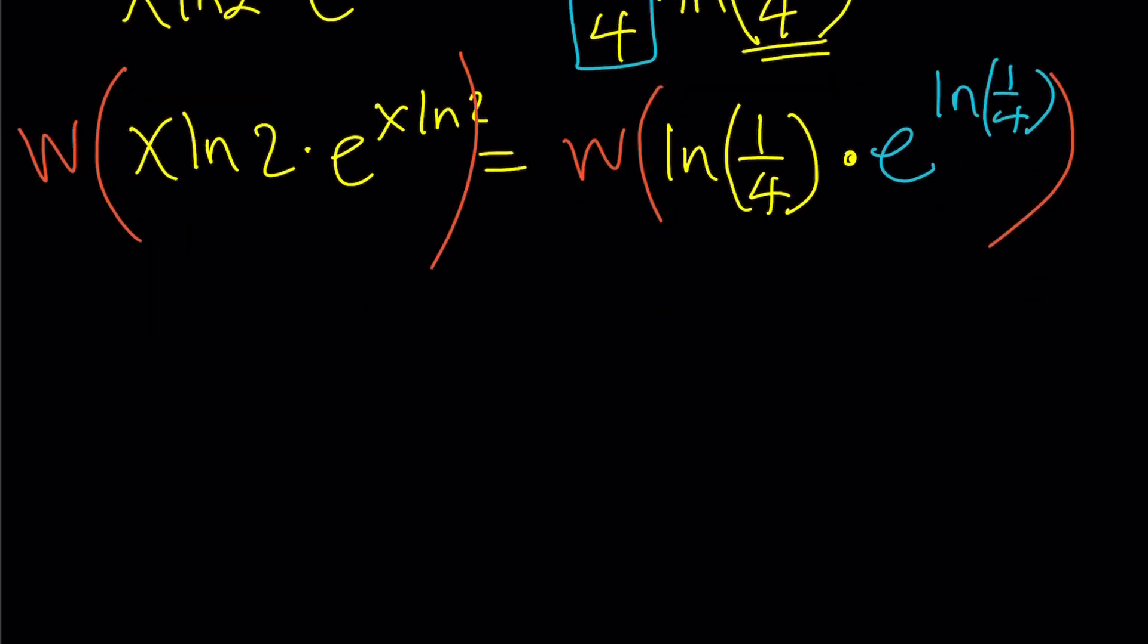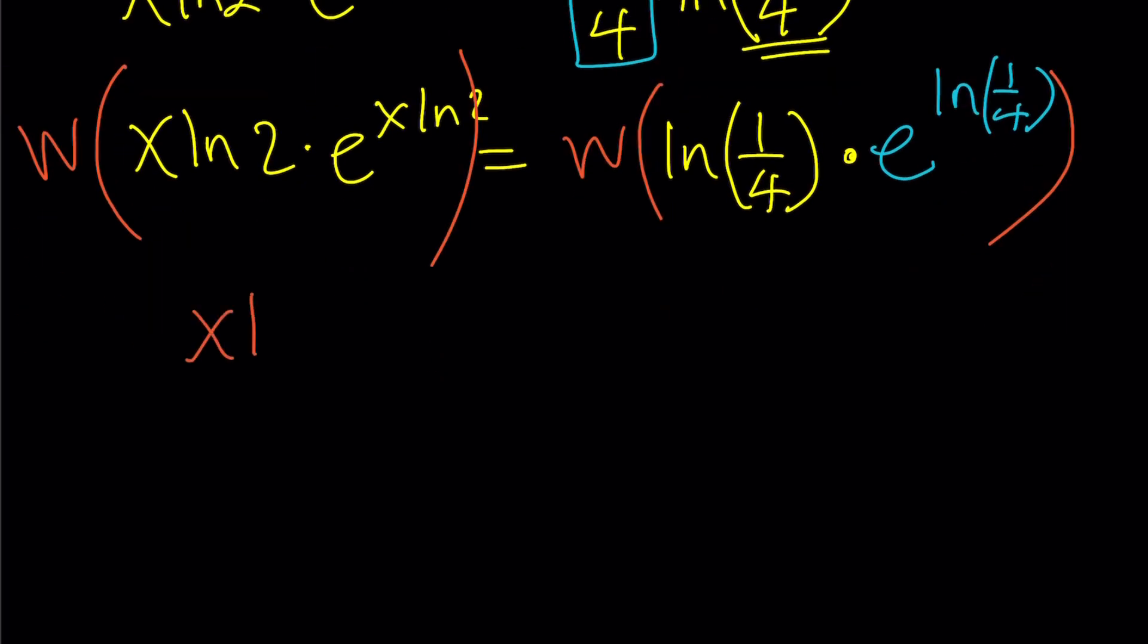The left-hand side, again, is going to give me x ln 2, and the right-hand side, this time, is going to give me ln 1 fourth. Remember, last time it gave me something else, it gave me negative 1 half ln 2.